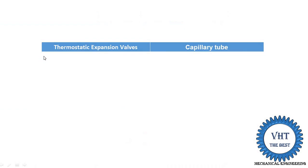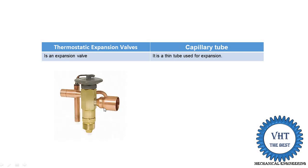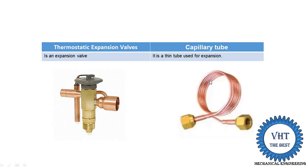The first point is that the thermostatic expansion valve is one type of expansion valve, while the capillary tube is a thin diameter tube used for expansion. The expansion valve looks like the image shown. Both the expansion valve and capillary tube are installed between the condenser and evaporator to reduce the pressure at constant enthalpy.